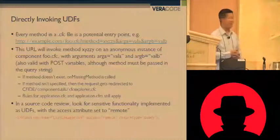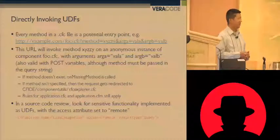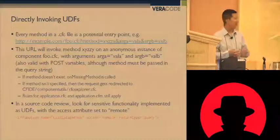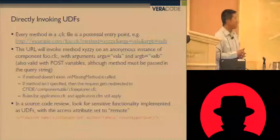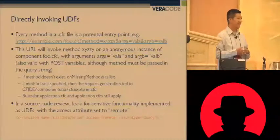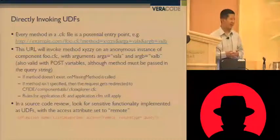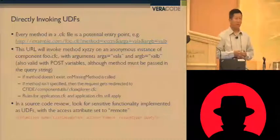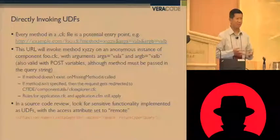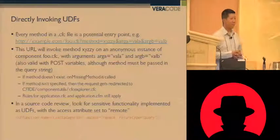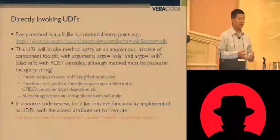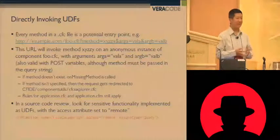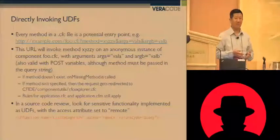There are various things that happen if the method doesn't exist or isn't specified — it goes into error handling methods or onMissingMethod in application.cfc. What to look for in any CFC during a code review is the cf function tag. At the bottom you can see 'access equals remote.' If you're setting this up as a web service, you have to set access to remote. But if the function is only going to be called by another ColdFusion page, it doesn't need to be remote — you can leave that attribute off. By default it'll be set to public, which means other pages can access it but it can't be accessed remotely.